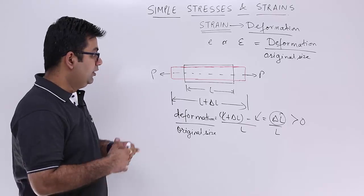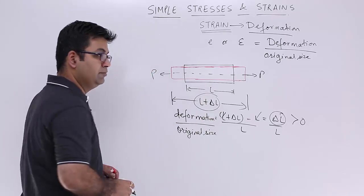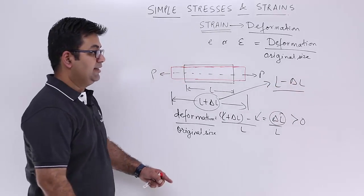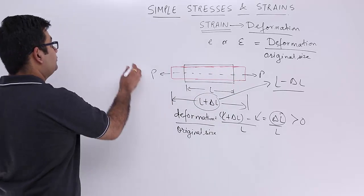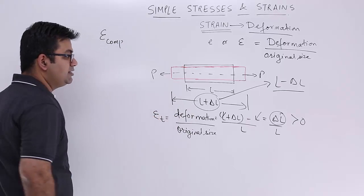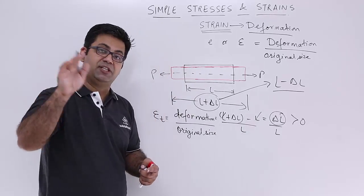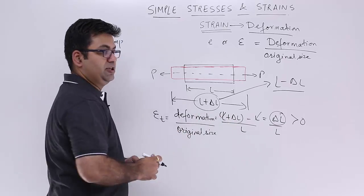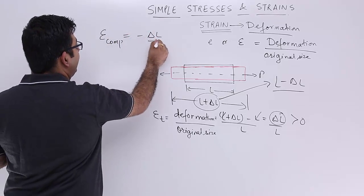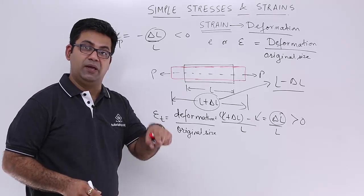In a compressive loading scenario, the length will reduce, so it becomes L minus delta L — delta L is a negative quantity. Tensile strain is a positive strain: if tensile stress is positive, it produces a positive strain in the body. A compressive strain would be negative delta L upon L, because it is less than zero, and it produces a negative stress as well.